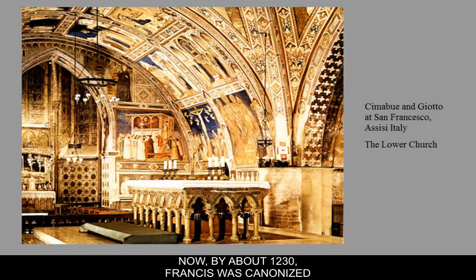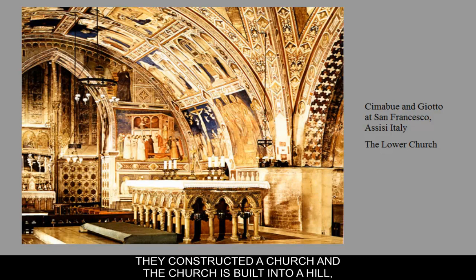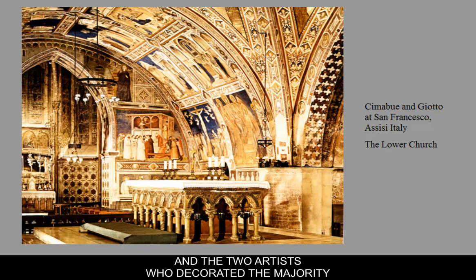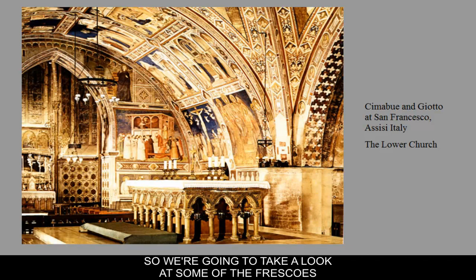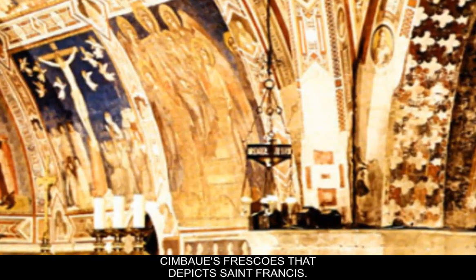By about 1230, Francis was canonized — made a saint. Shortly thereafter, a church was constructed in Assisi, built into a hill with an upper and lower part, dedicated to St. Francis. The two artists who decorated the majority of the church are Cimabue and his student Giotto. We're going to look at some of the frescoes, starting with one of Cimabue's frescoes depicting St. Francis.